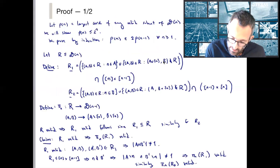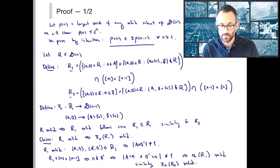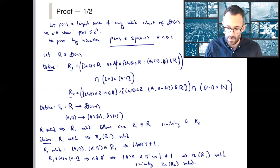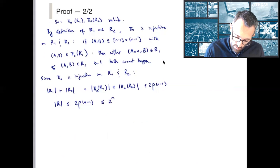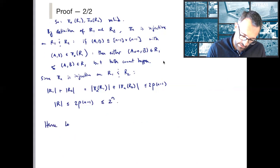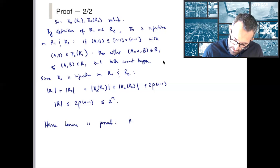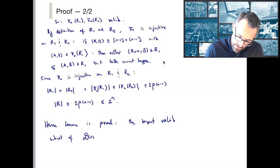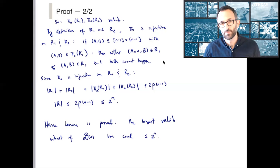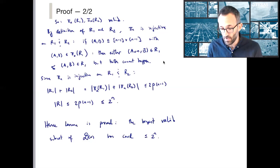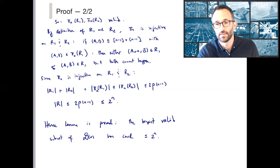Let me flip back a page so we can see this is exactly what we wanted to show. And since ρ(0) = 1, this implies that ρ(n) is less than 2 to the n. Hence the lemma is proved, which tells us that the largest valid subset of D(n) has cardinality at most 2 to the n. Therefore, if I want to cover a set of size 3 to the n, I need at least 1.5 to the n of these sets. This concludes the proof that the correlation polytope has extension complexity at least 1.5 to the n.